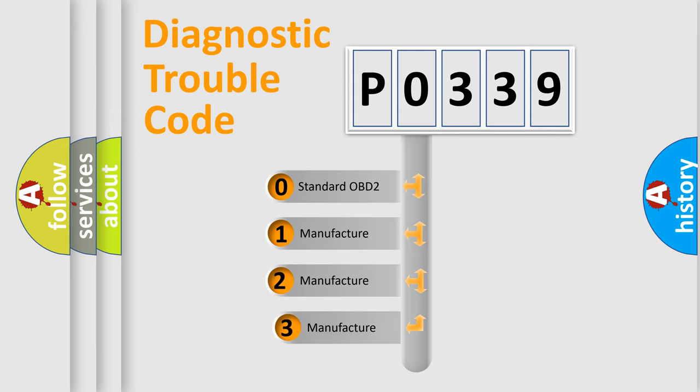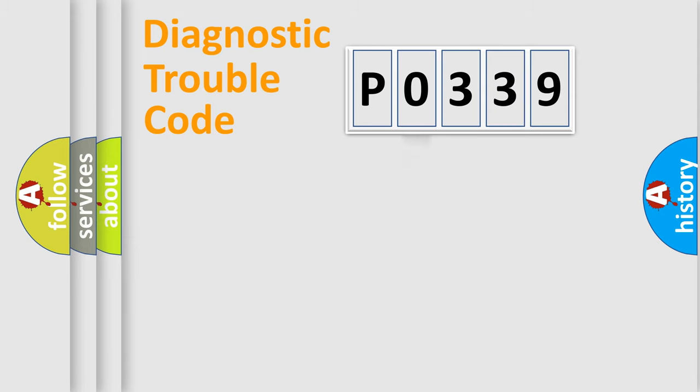If the second character is expressed as 0, it is a standardized error. In the case of numbers 1, 2, 3, it is a car-specific error expression.